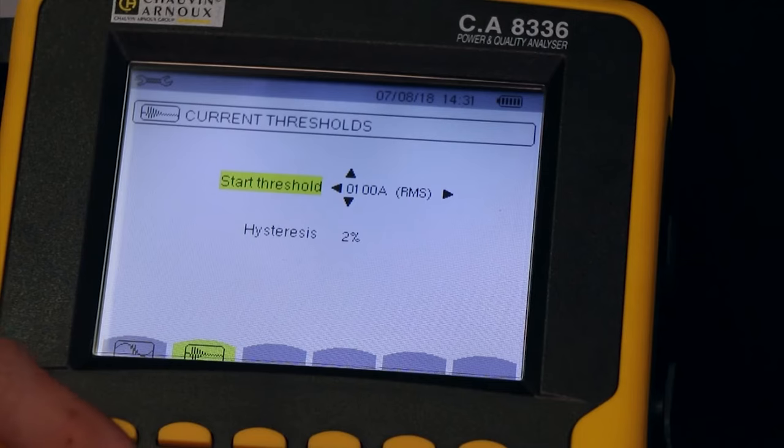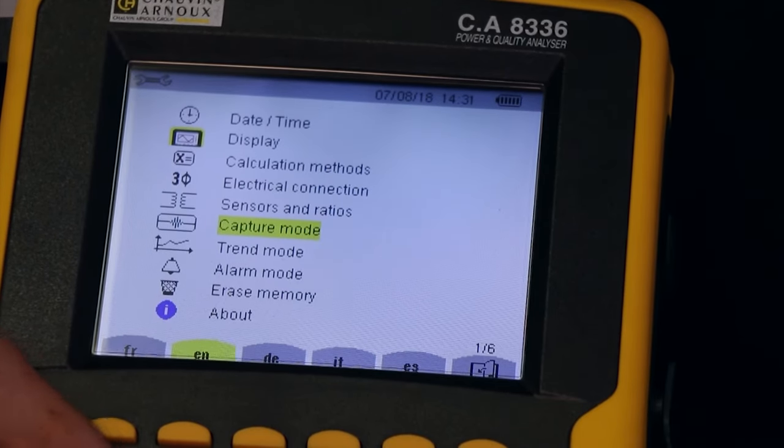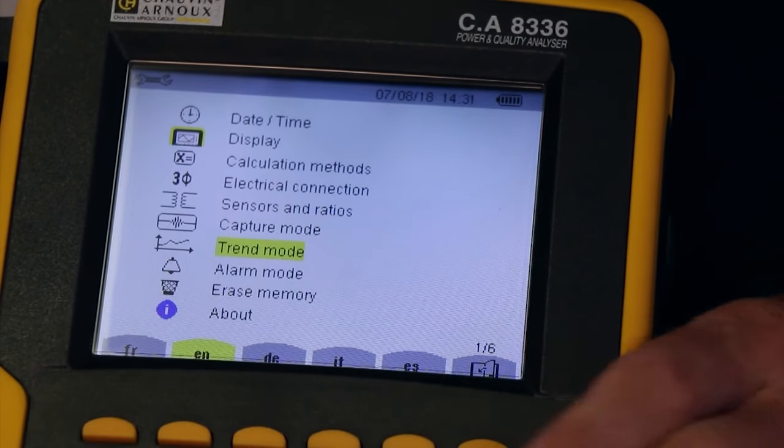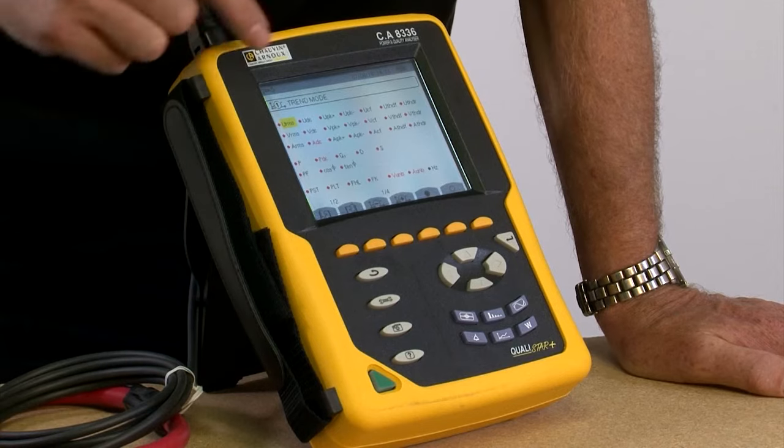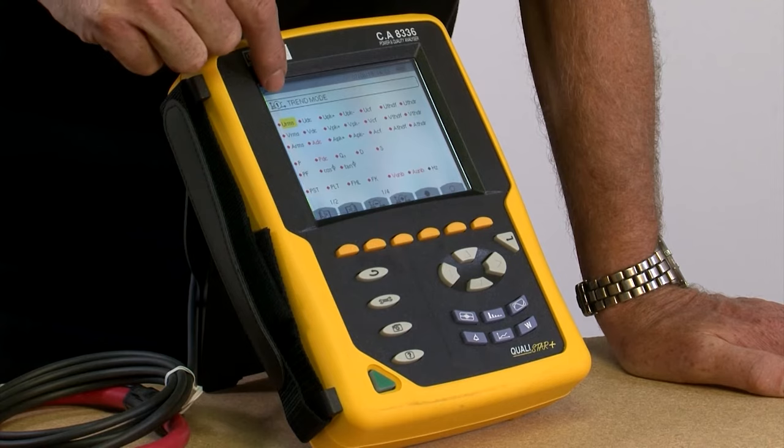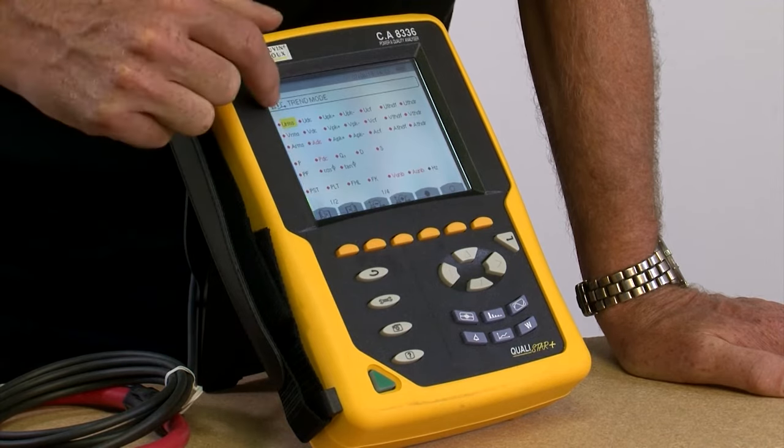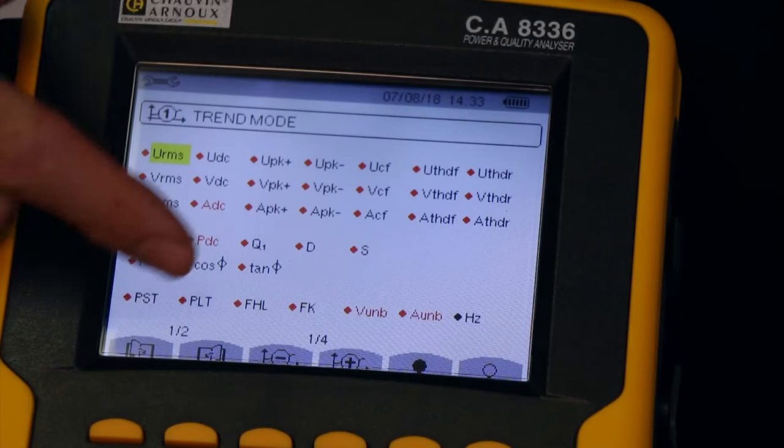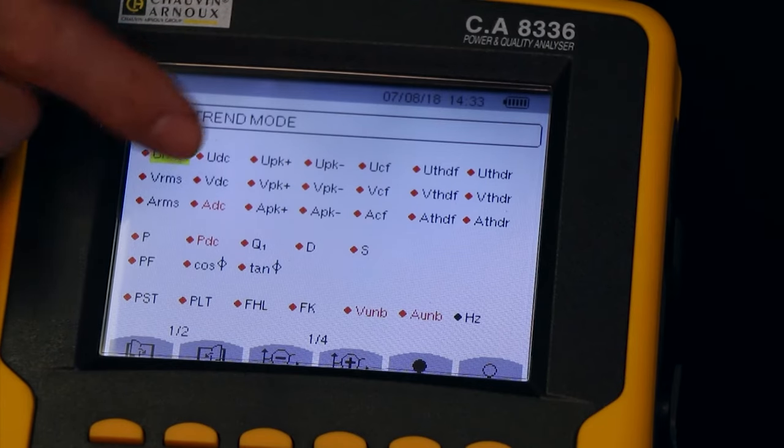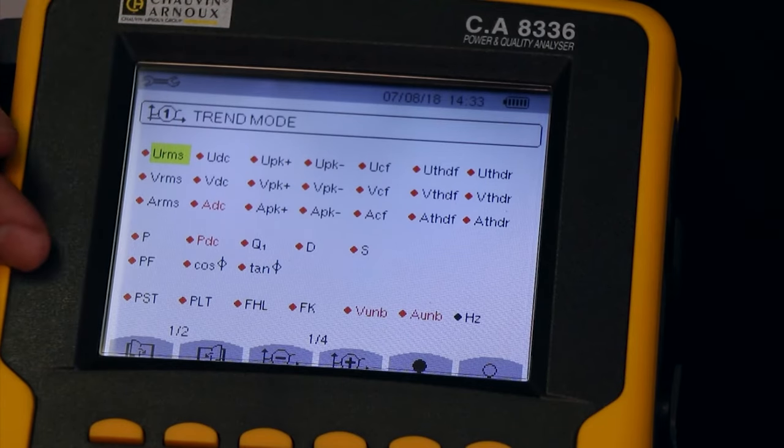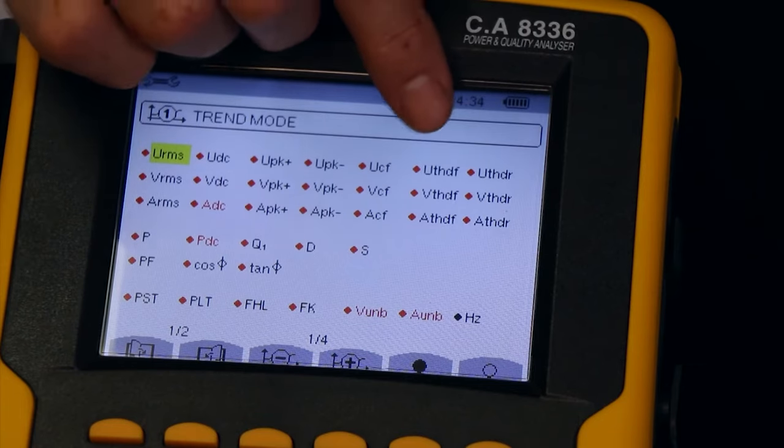The next setup screen down is trend mode. And in trend mode, we tell the product what parameters to record. So in trend 1 at the moment, we have all of the parameters selected. We've got volts RMS, amps RMS, voltage peak, positive peak, negative peak, power factor, phase angle, cos phi, etc.